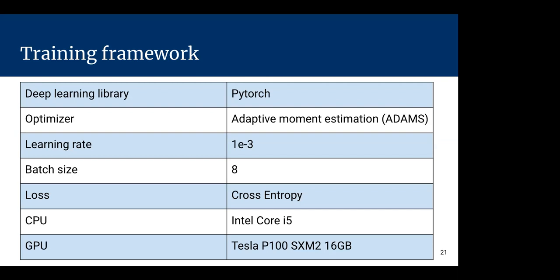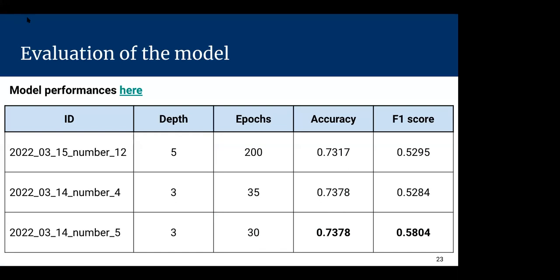I have obtained the following preliminary results. The best configuration uses a depth of three, and with 30 epochs we obtain an accuracy of 0.73 and an F1 score of 0.58. These are only preliminary results, and there is a lot of work remaining.